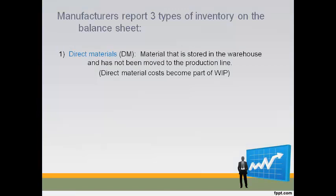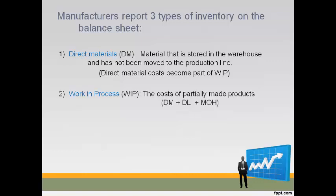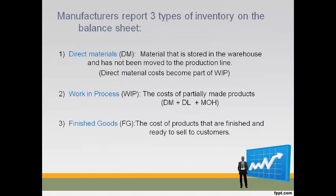Manufacturers report three types of inventory on their balance sheets. Direct materials are materials not yet on the production line, stored in the direct materials warehouse. Work in process represents the cost of partially completed products remaining on the production line at the end of the period, and consists of direct material, direct labor, and manufacturing overhead combined. Finished goods represents the cost of completed products in the finished goods warehouse, ready to be sold to customers.